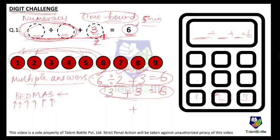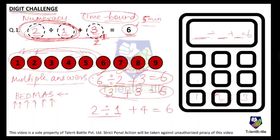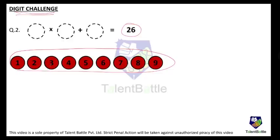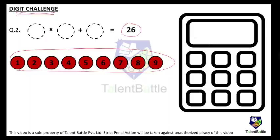Another valid answer: fill the first blank with 4. Then the remaining two numbers must give 2. I can do 2 divided by 1, which equals 2, plus 4 equals 6. So 2/1 + 4 = 6 is also a valid answer using three different digits. There are multiple answers to the same question. What matters most is solving as many as possible as quickly and accurately as possible — it's the time constraint that makes it difficult.